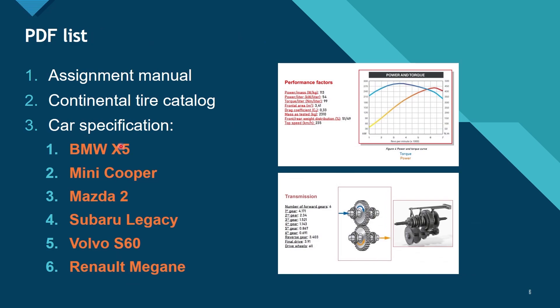The PDFs I've supplied are the following: the Assignment Manual, the Continental Tire Catalog, and one car specification PDF that I left for you to choose. You can choose between six cars — whichever one you want to analyze. If you want to use another car you fancy, you can, just make sure you have all the information that is in these specification PDFs, because this information is crucial for the assignment.